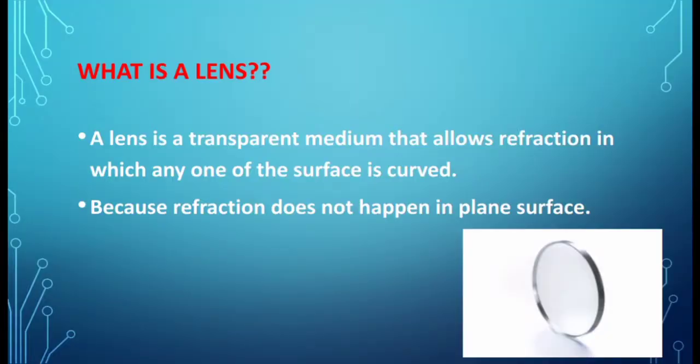Hello friends, in this video we are going to see about lens and the forms of lens. First of all, we are going to see what is a lens. A lens is a transparent medium — a medium which allows light rays to pass through it is termed as a transparent medium.